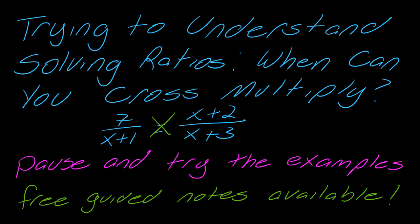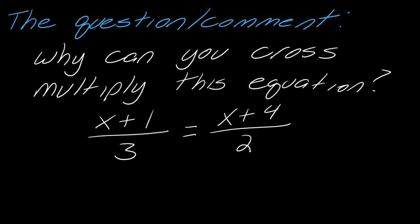So I got another great question about trying to understand solving ratios. The question is, why can you cross multiply? The student had something like this, and we've been working with rational equations. I just busted out cross multiplication and there was a question: why can we suddenly do that?